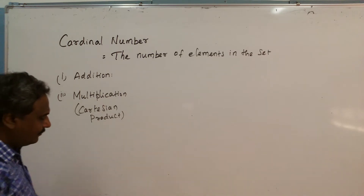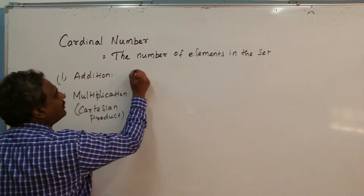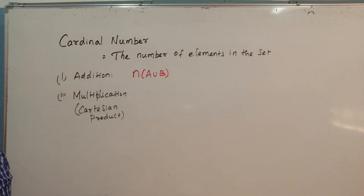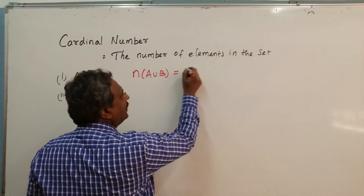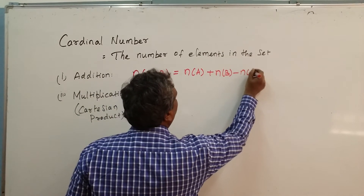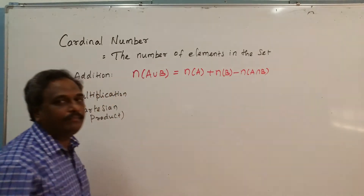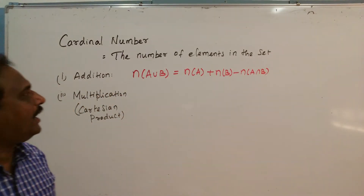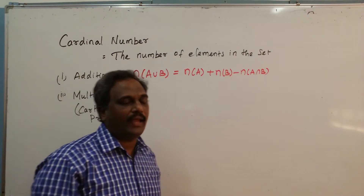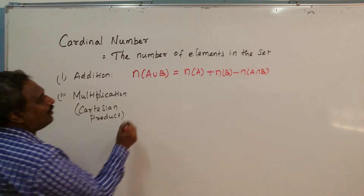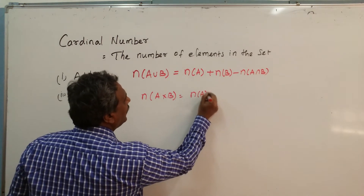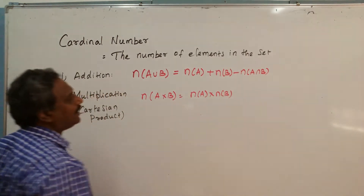For addition, we are going to give you a rule: n(A∪B) = n(A) + n(B) − n(A∩B). For multiplication, for the Cartesian product: n(A×B) = n(A) × n(B).